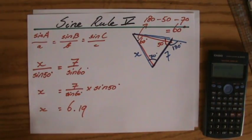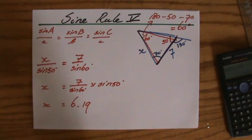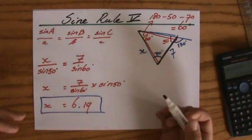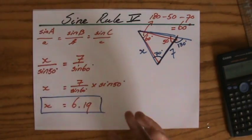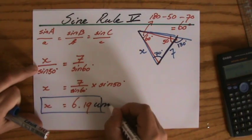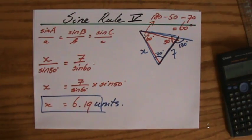And three significant figures, it's going to give me 6.19. Now, do I have to do the inverse sine or whatever? No, I don't, because I'm not looking for an angle. I'm looking for a length 6.19. Centimeters, meters, kilometers, they don't give me units, so I could say 6.19 units long. Alright, it's time for the cosine rule. See you there.